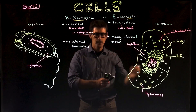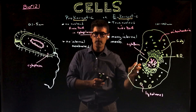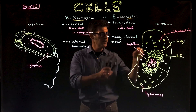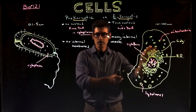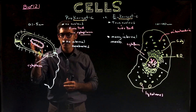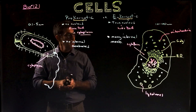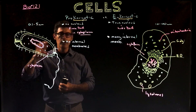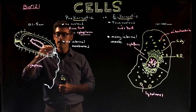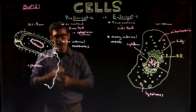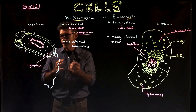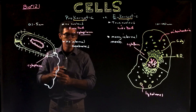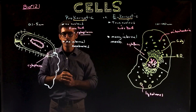All those compartments allow specialization. They allow waste to be stored in certain places, ions to be stored in certain places, and certain enzymes to go in certain places. In a prokaryotic cell, we can't have that — everything is in one cytoplasm: all the enzymes, all the waste, all the proteins, the DNA, all the molecules. Bacteria do have some ways to structure this environment to be a little more specialized, but it's nothing like the eukaryotic cell.